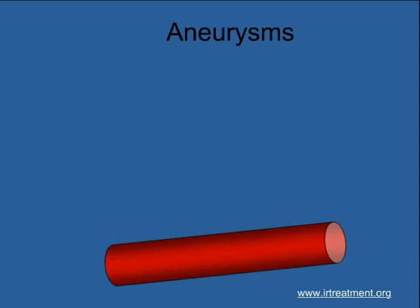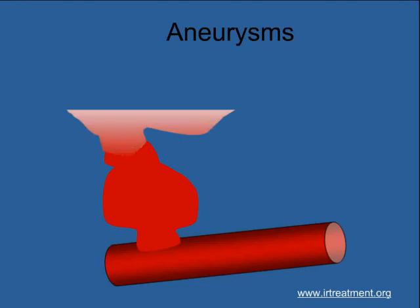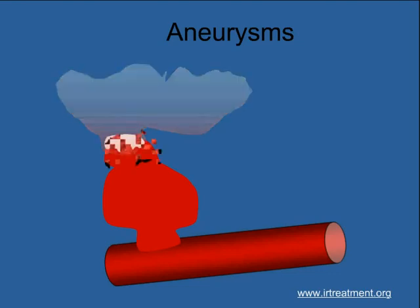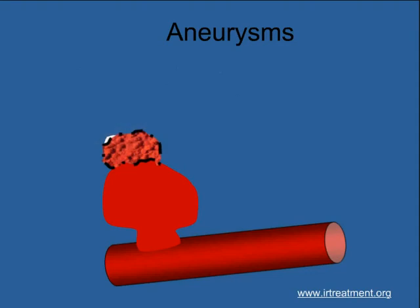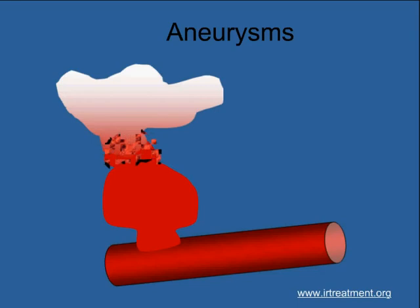Aneurysms are small outpouchings that develop from a weak area in a blood vessel. These outpouchings grow big, at times develop a daughter aneurysm, and then can rupture. Once they rupture, the area is blocked by a blood clot. Unfortunately, this is not stable — the clot may dissolve again in the next few days.